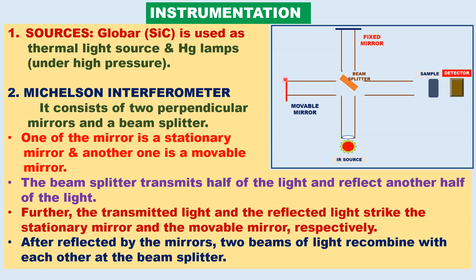One mirror is fixed and another is a movable mirror. The beam splitter splits the IR beam into two halves — one half is transmitted and another half is reflected to the movable mirror. The transmitted light from the movable mirror and fixed mirror meet at the beam splitter to recombine. There are two possibilities: constructive interference and destructive interference. The beam is then allowed to pass through the sample and then the detector.